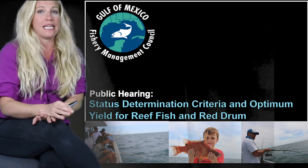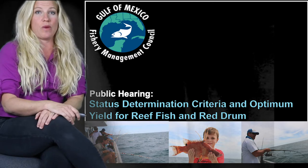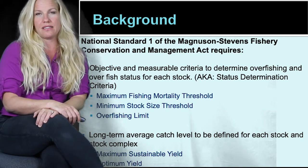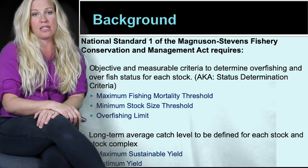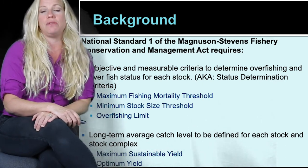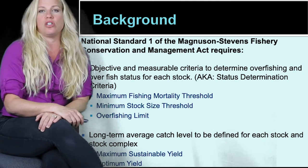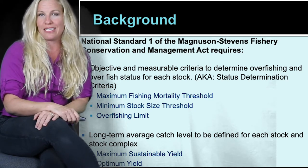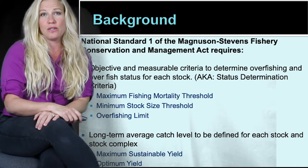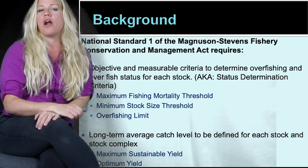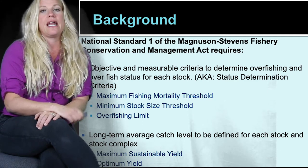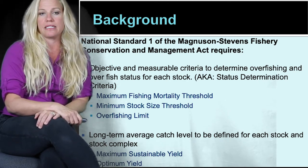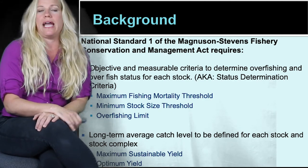Now I have to warn you, this document is quite technical so I'm going to do my best to explain it in a way that we can all understand. We're working on this amendment because National Standard 1 of the Magnuson-Stevens Fishery Conservation and Management Act requires a couple of things. First, we must have objective and measurable criteria to determine overfishing and overfished status of each stock — what we call status determination criteria — and that includes our maximum fishing mortality threshold, our minimum stock size threshold, and our overfishing limit. We also have to define long-term average yield levels for each stock and stock complex, including both maximum sustainable yield and optimum yield levels.